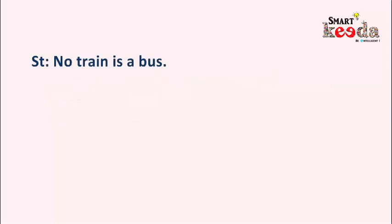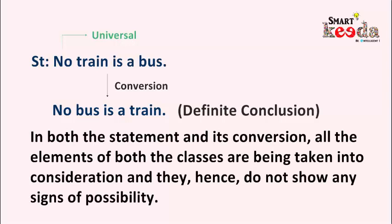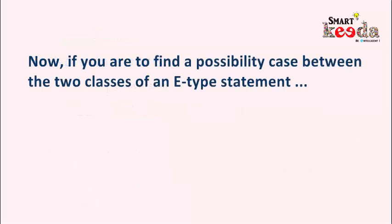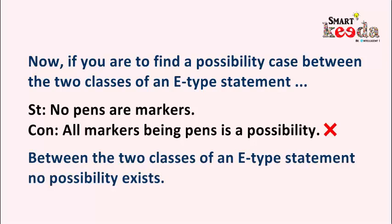Now let's take an E-type statement. The example is: no train is a bus. It's a universal statement, and in this statement both the classes — train and bus — are being distributed, meaning all the elements from both classes are being taken into consideration. Therefore, if no train is a bus, no bus is a train either, which is also a universal negative statement. In both the statement and its conversion, all the elements of both classes are taken into consideration and hence they do not show any signs of possibility. So if you are to find a possibility case between the two classes of an E-type statement — let's say: no pens are markers, and the conclusion is: all markers being pens is a possibility — you can straight away mark this conclusion wrong, because between the two classes of an E-type statement, no possibility exists.